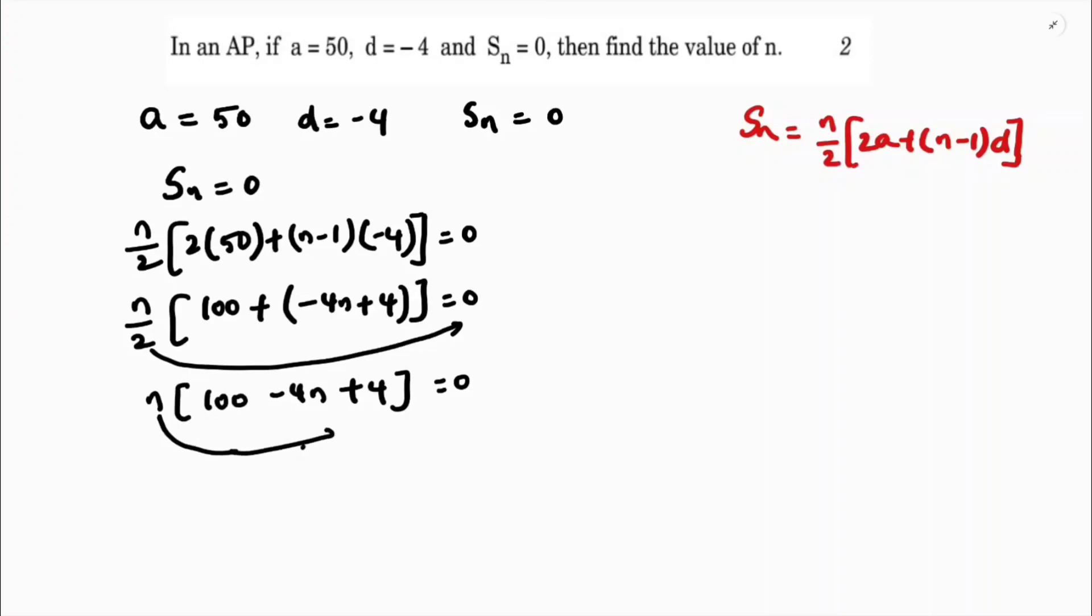Transpose this n also towards right side. So, you will get 100 plus 4, 104, minus 4n equals 0 by n, which is nothing but 0. So, here, 104 minus 4n equals 0.